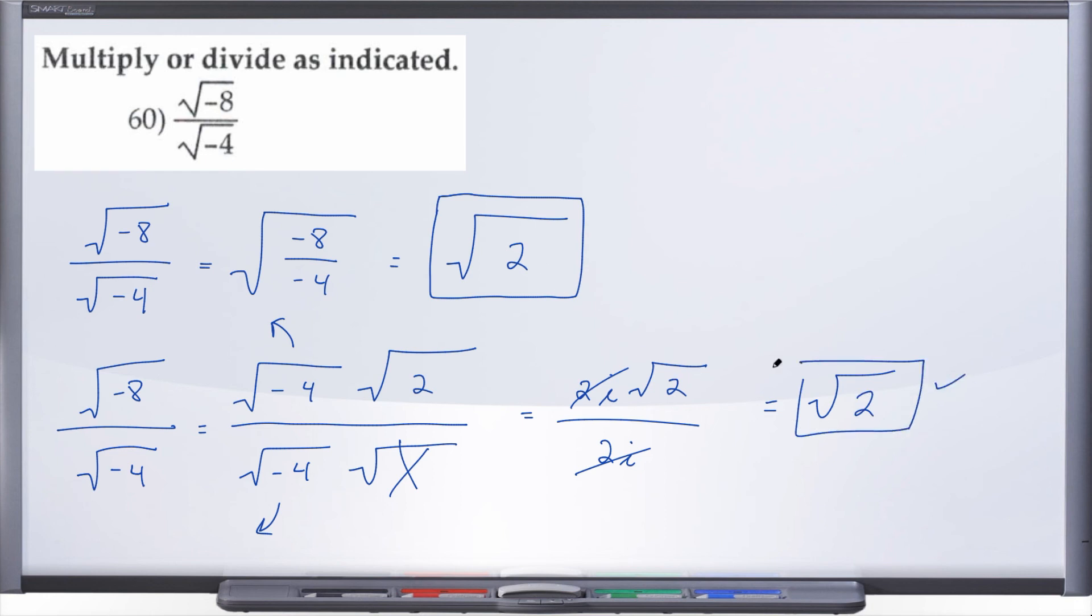So either way you get to the same answer, but I think like I said this first way is a lot easier and fewer steps. But whichever way you prefer to do it, we still arrive at the same answer, so radical 2 is our answer for number 60.